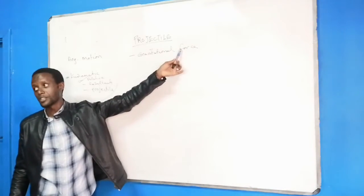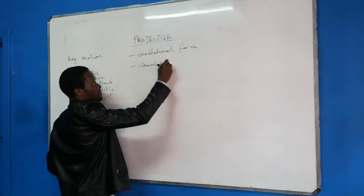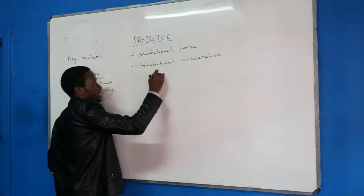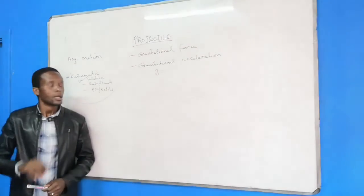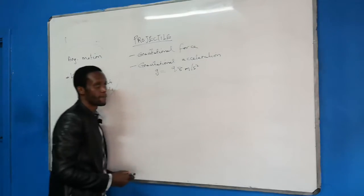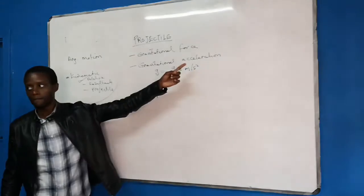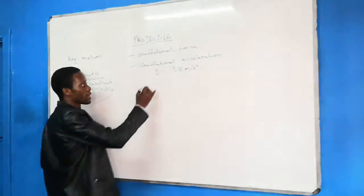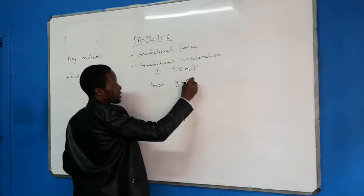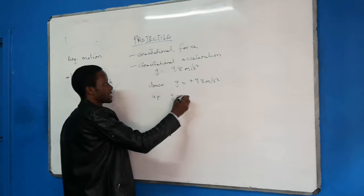The force causes acceleration, therefore there is gravitational acceleration. This gravitational acceleration, represented by g, is equal to 9.8 meters per second squared. If something is falling, it is accelerating at 9.8 meters per second squared towards the ground. When the object is going down, gravity equals positive 9.8; if the object is going up, gravity is negative 9.8.